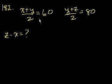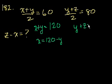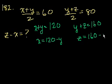Let's solve for x in terms of y. We get x plus y equals 120. Just multiply both sides by 2. So x equals 120 minus y. Now let's solve for z in terms of y. Multiply both sides by 2, you get y plus z equals 160. z equals 160 minus y.